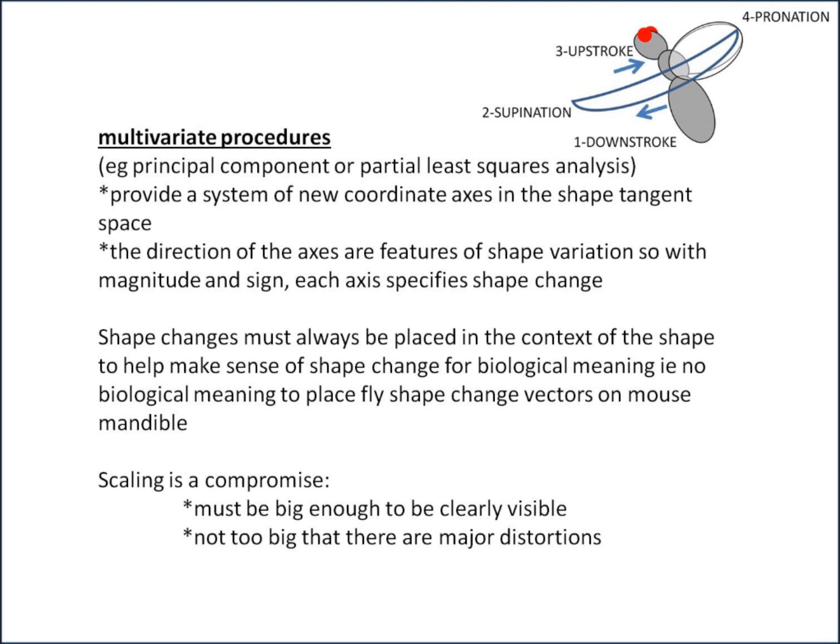Multivariate procedures such as principal components or partial least squares analysis provide a system of new coordinate axes in the shape tangent space. The direction of the axes are features of shape variation, so with magnitude and sign, each axis specifies shape change. That's what you think of when you're doing, for example, principal component one. If you plot PC1 against PC2 scores, you've got one direction showing a specific shape change. If you go in the other direction, the shape change will be in the other direction.